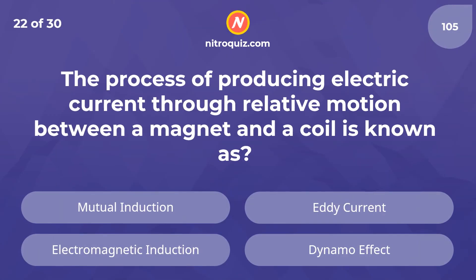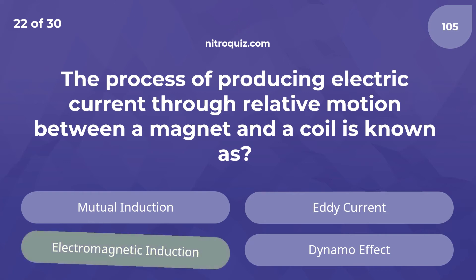The process of producing electric current through relative motion between a magnet and a coil is known as what? The answer is electromagnetic induction.